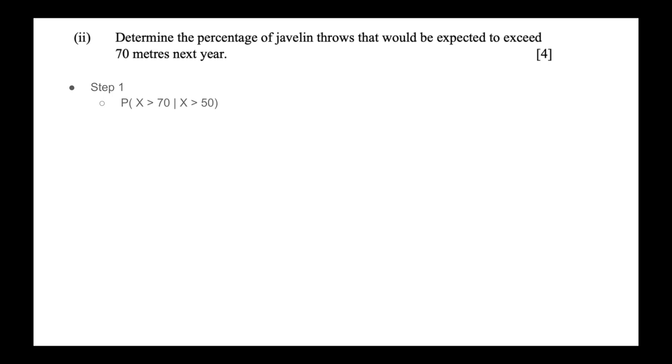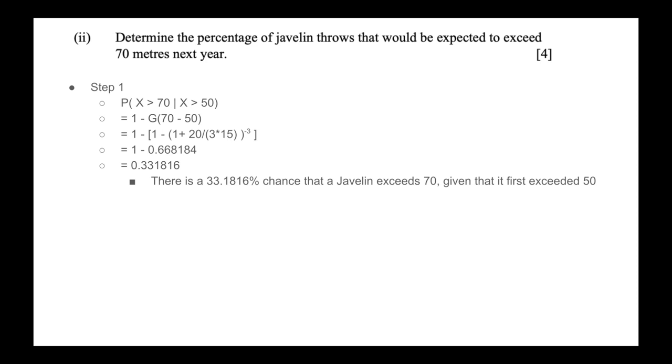Step one: what is the probability that X is greater than 70, given that X is greater than 50? The reason we want this is because now we can use our generalized Pareto distribution. We have the thing we try to exceed minus the threshold, plug that into our formula, substitute those parameters for the values given, and we get our answer of 0.331816, which means there's a 33.1816% chance that a javelin exceeds 70, given that it first exceeded 50.